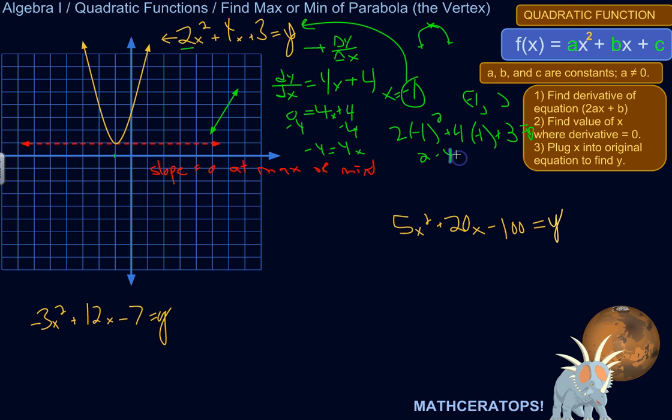So negative 1 squared is just 1. Times 2 is 2. So we've got 2. 4 times negative 1 is negative 4. And then plus 3. So 2 minus 4 is negative 2. Plus 3 is 1. So when x is negative 1, y is positive 1. Which we can see there. Negative 1, positive 1.